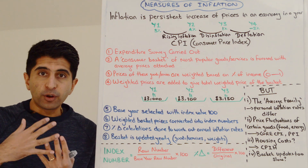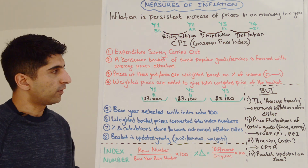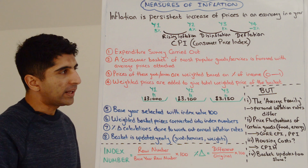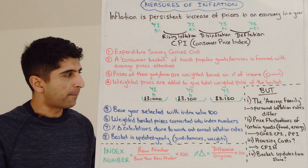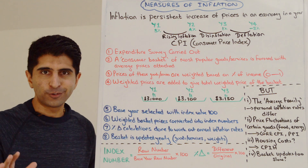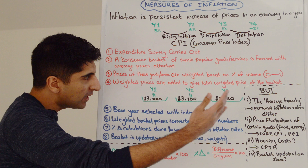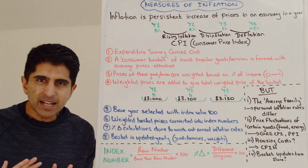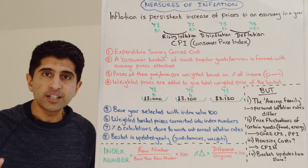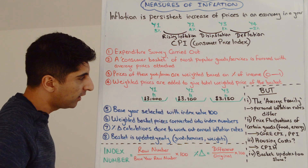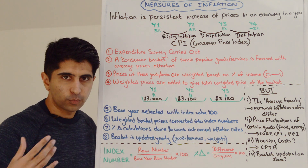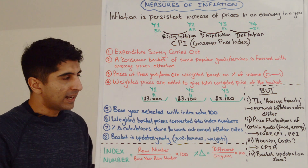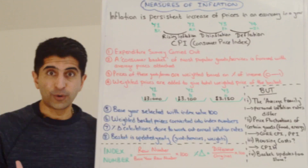Once we've got the weighted prices of all the goods and services, we add them up to get the total weighted price of the basket. I've drawn three different baskets in three different years. In year one, £3,000; in year two, £3,100; and in year three, £3,150. Let's now go into how the index is formed.